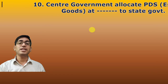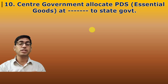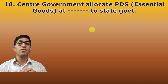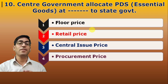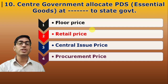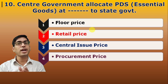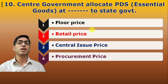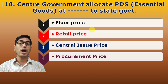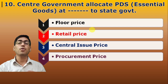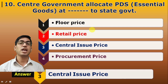Tenth question: At what price does the Central Government allocate PDS or essential goods to states? All responsibility from procurement to delivery to consumers lies with the government. The answer is Central Issue Price (CIP). The floor price is the equilibrium price below which the market price cannot fall. The procurement price is for procurement, and CIP is the price at which the Center allocates to states.